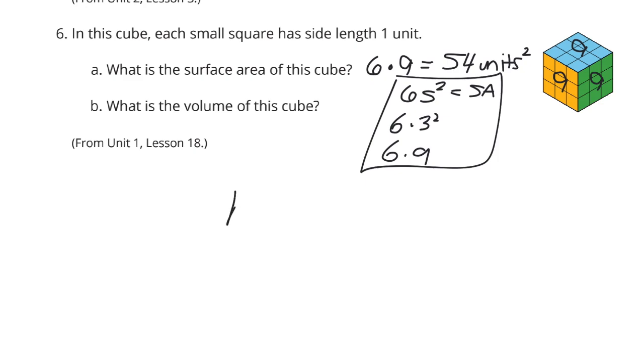The volume, however, we learned side cubed or side times side times side. So, three to the third is three times three times three, which is 27 cubic units. That's three times three is nine, times three is 27.